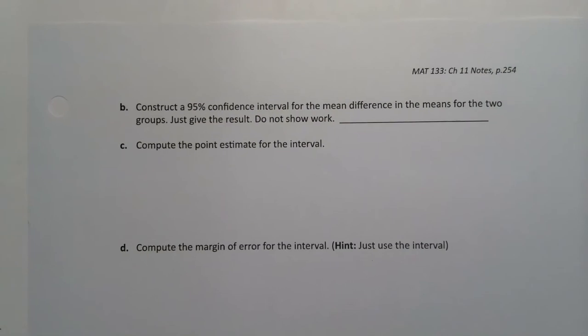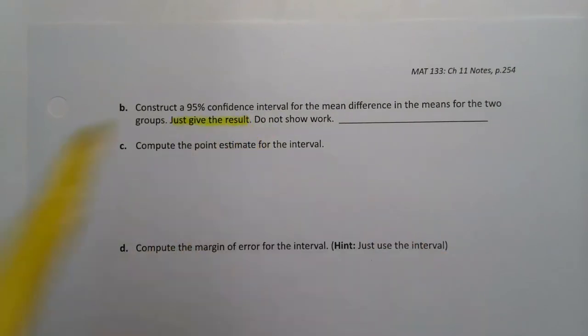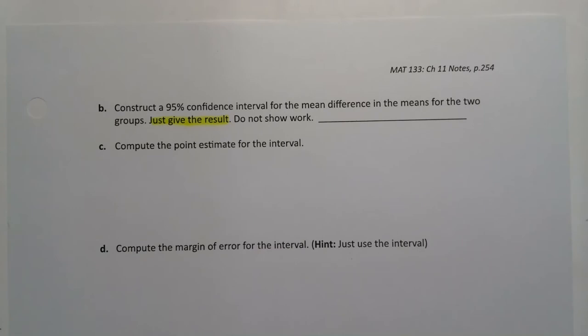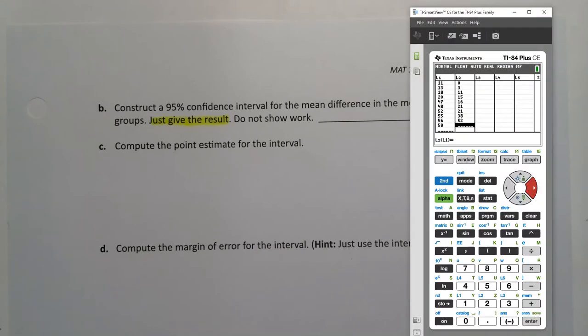So now let's construct that confidence interval. I just want to give the result. I'm not asking for the formula or anything like that, probably because the formula is so awful. So we're just going to get this out of the calculator or StatCrunch. Let's start with the calculator. You'll notice I put the values in for L1 and L2. These are two separate groups. You'll notice they don't match in size. That's okay, that's because they're independent of each other, so they don't have to match in size.